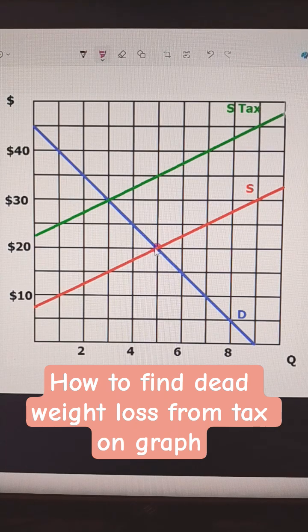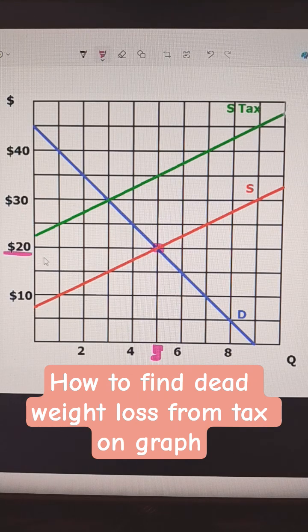So without the tax, we just go to where supply meets demand. That's right there. They would sell five units, and the price would be $20.